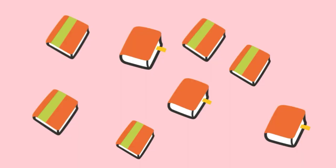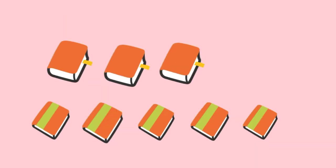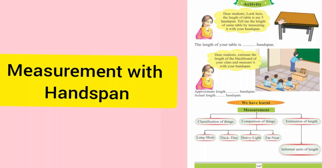Dear students, there are 8 thick and thin books. If there are 3 thick books, then how many thin books are there? Yes, 5 thin books. So, 3 and 5 are 8 books.